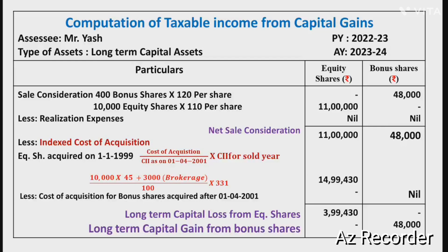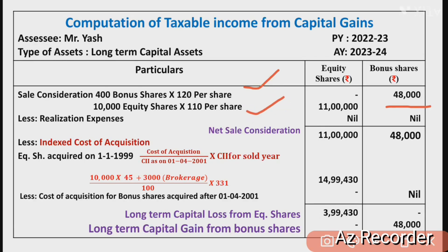First, Mr. Riesh sold 400 bonus shares at Rs. 120 per share, so 400 × 120 = Rs. 48,000. This goes into the bonus shares column. He also sold 10,000 equity shares at Rs. 110 per share, so 10,000 × 110 = Rs. 11,00,000. This goes into the equity shares column. There were no realization expenses in either case.